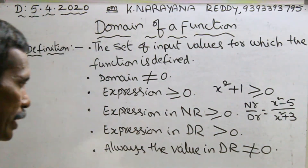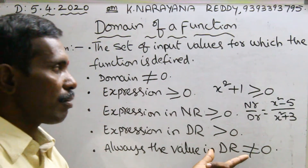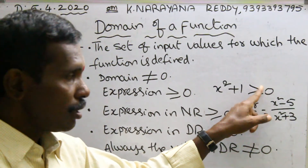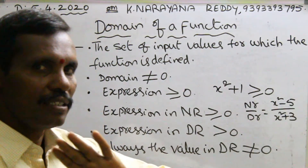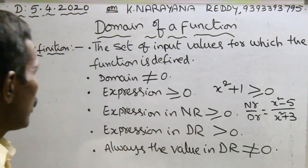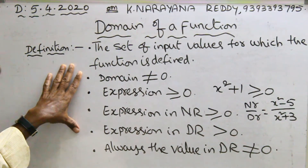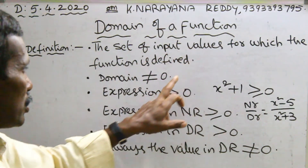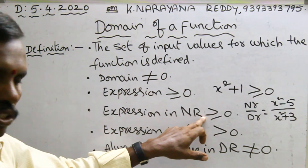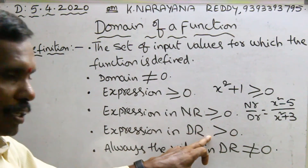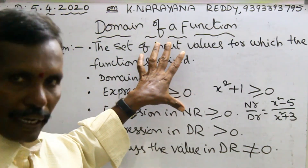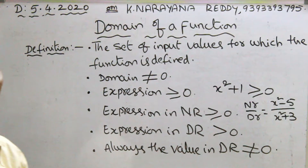Always, the value in the denominator is not equal to zero. Numerator may be zero sometimes, but the value in the denominator is not equals to zero. That is the important point. This is some introduction about domain: input values, denominator not equal to zero, expression always greater than or equal to zero, expression in numerator greater than or equal to zero, expression in denominator greater than zero. These are some prelims regarding domain.